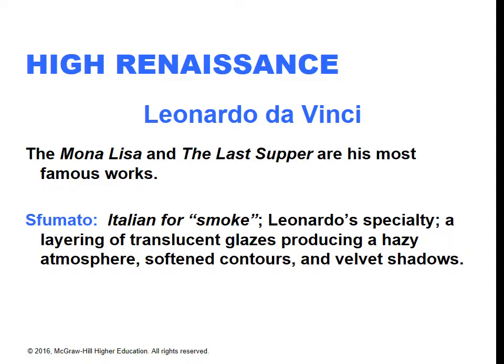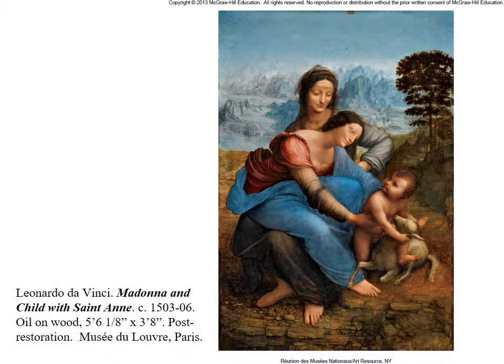One of Leonardo's techniques and stylistic hallmarks is what's called sfumato — Italian for smoke, derived from the Italian word for smoke. It's a layering of translucent glazes that produces a hazy atmosphere, softened colors, and velvety shadows. The image we have here is perhaps not the best example of sfumato, as it seems a little luminous — possibly because this is post-restoration and some layers of glaze may have been inadvertently removed along with the grime. But it does have some characteristics, and it's also an example of chiaroscuro, where variations in light and dark make the painting look more three-dimensional.